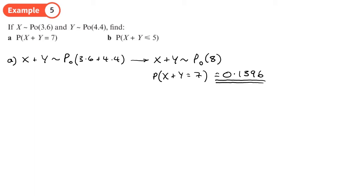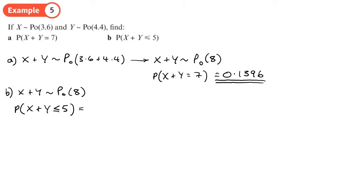Remember with these distribution questions we give answers to four decimal places, as that's traditionally what the tables work to. For part (b), we're still using the Poisson distribution with rate 8, and we want to find the probability that X + Y is less than or equal to 5. Using Poisson CD, variable, x = 5, lambda = 8, we get 0.1912.